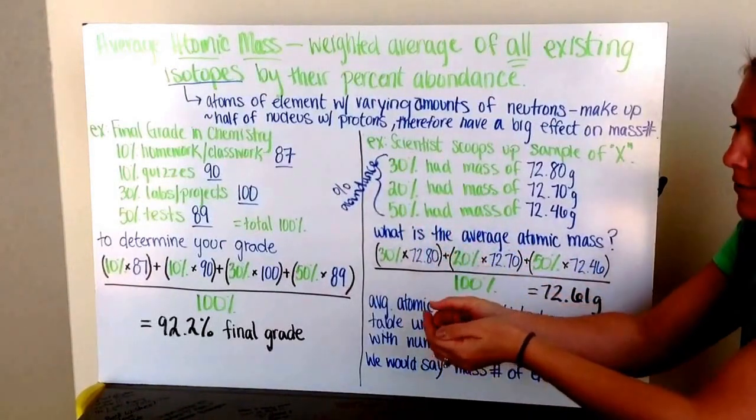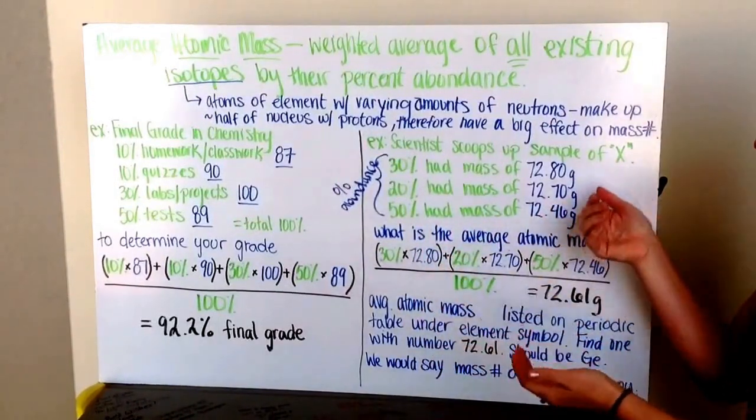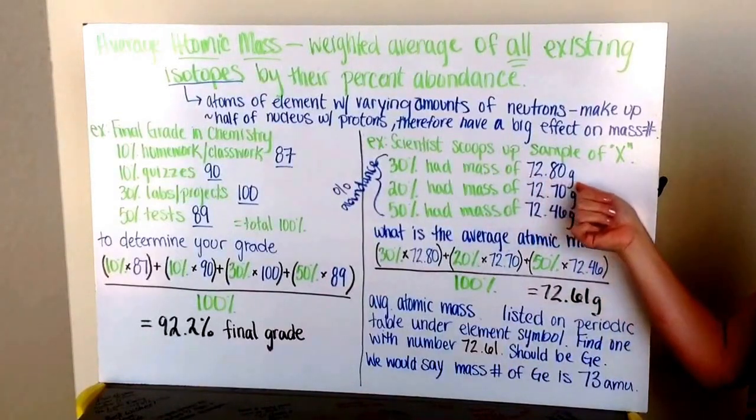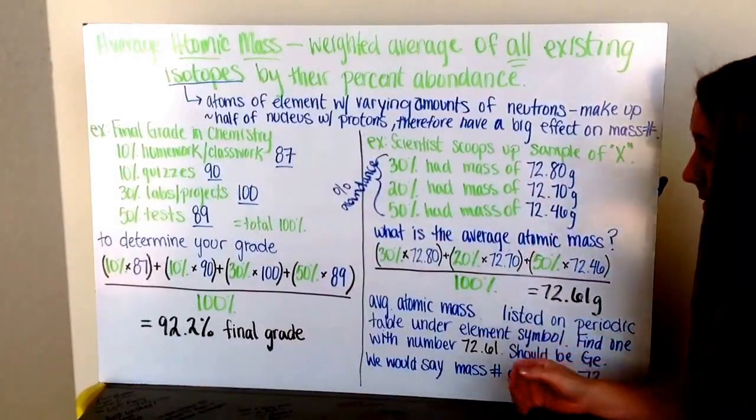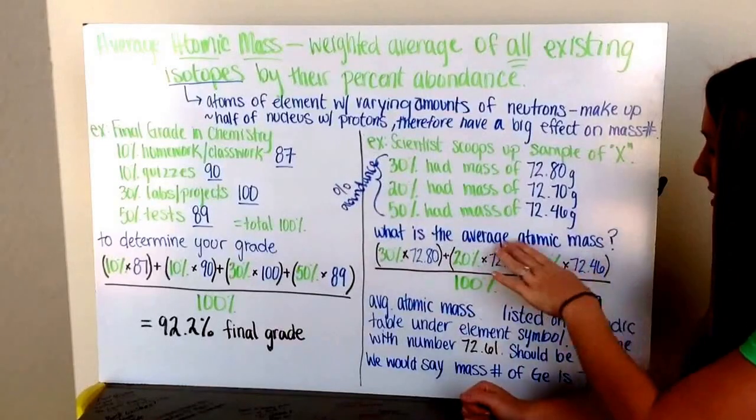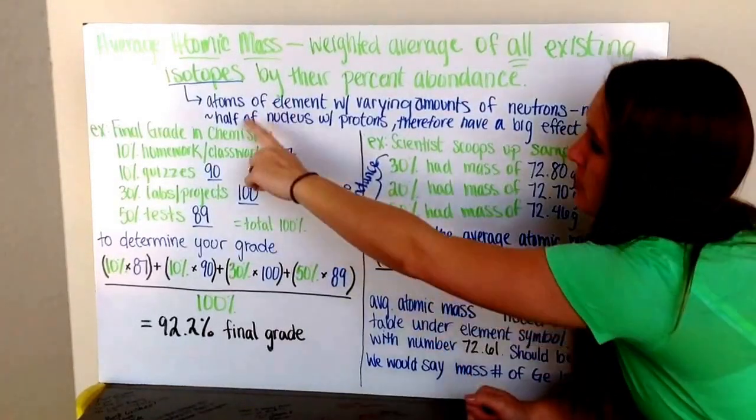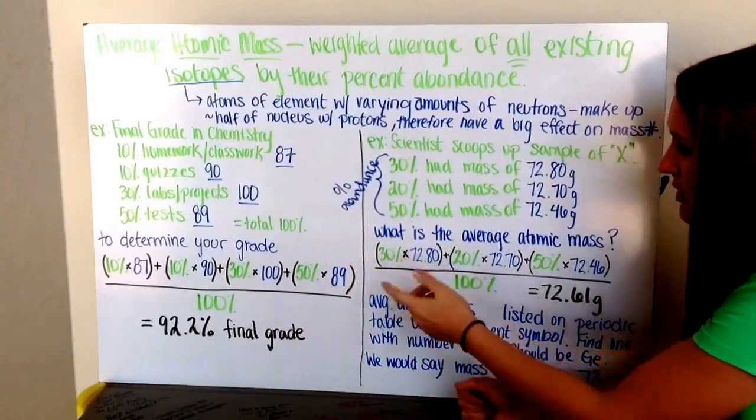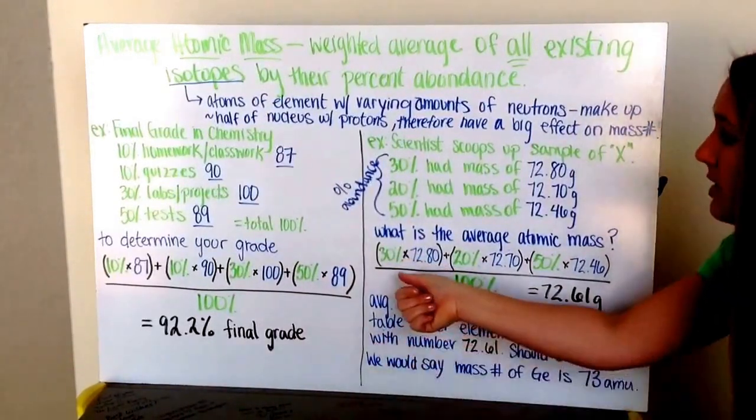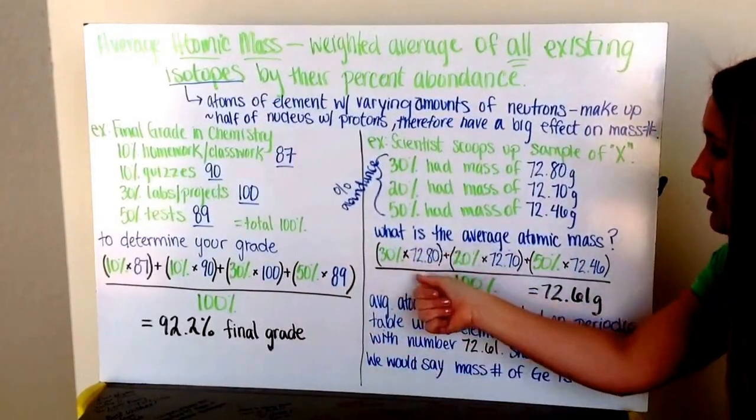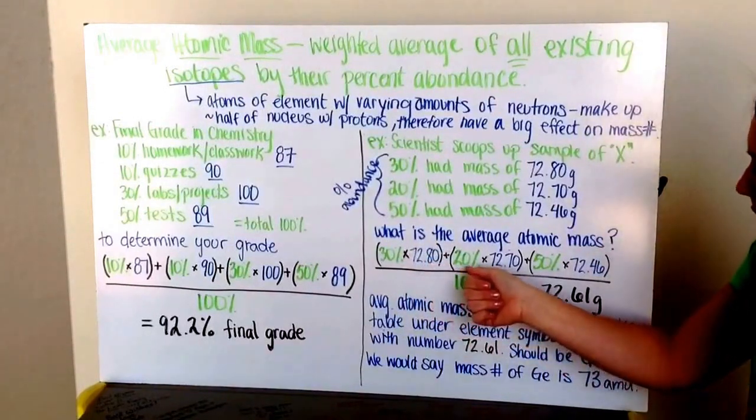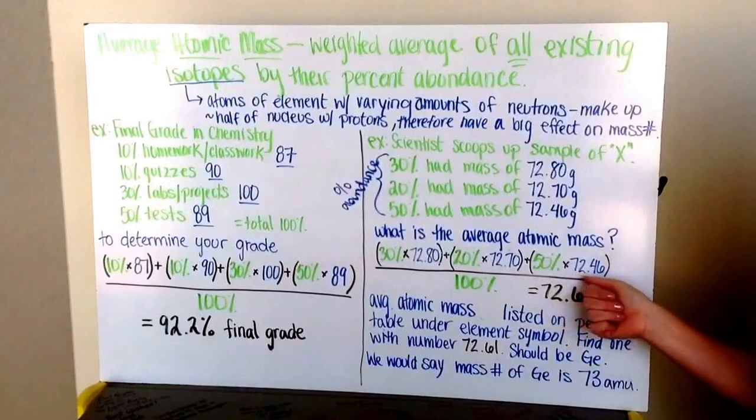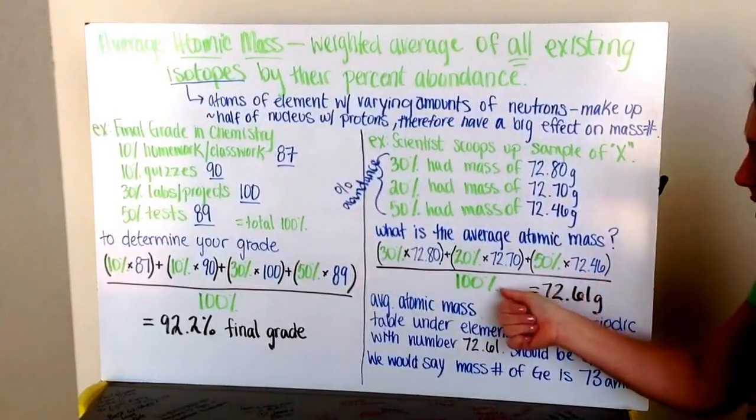So 30% of all of this element has a mass of 72.8 grams. To find the average atomic mass, we do the same thing as calculating our chemistry grade. We take 30% times 72.8, plus 20% times 72.7, plus 50% times 72.46, all divided by 100.